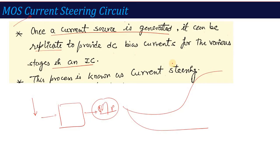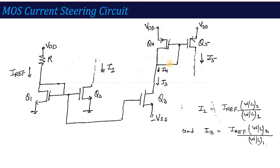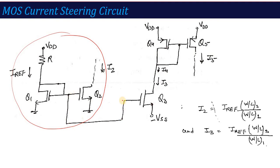This is the current steering process. Let me show you the circuit. This is a simple circuit — you can see here. This is our basic current mirror which we have studied. This same current mirror will drive another transistor. Q1 and Q2 are same-gate connected, and to Q3 we have applied that same Vgs. So Q3 is on the same Vgs, and this is our current mirror form.